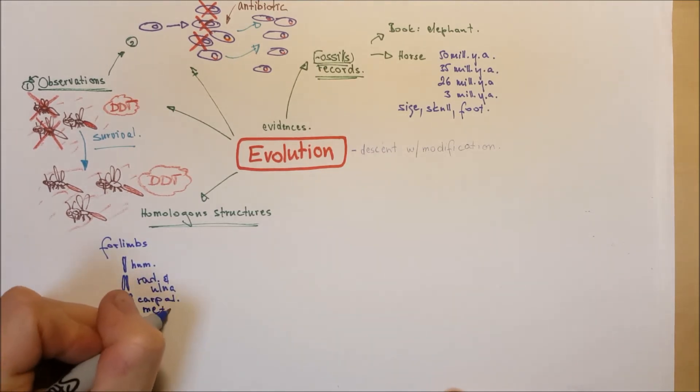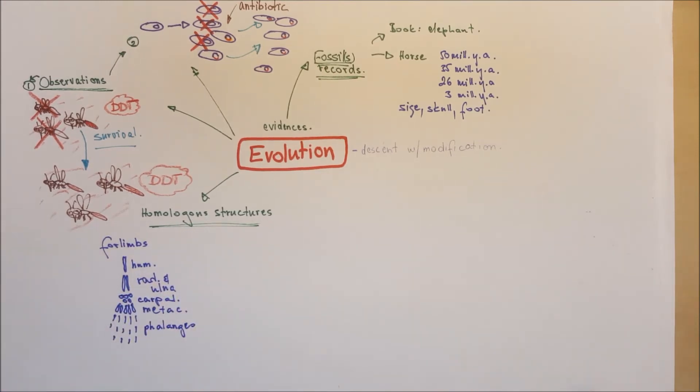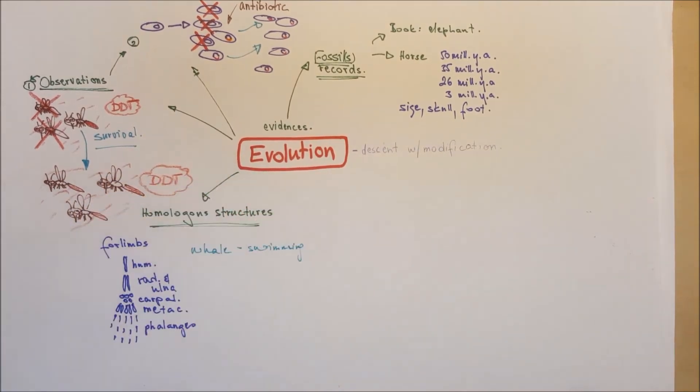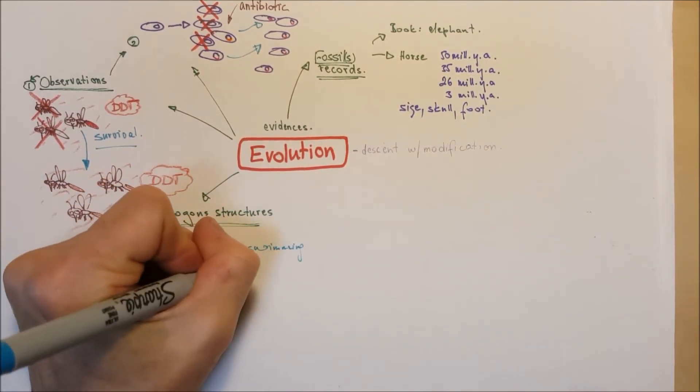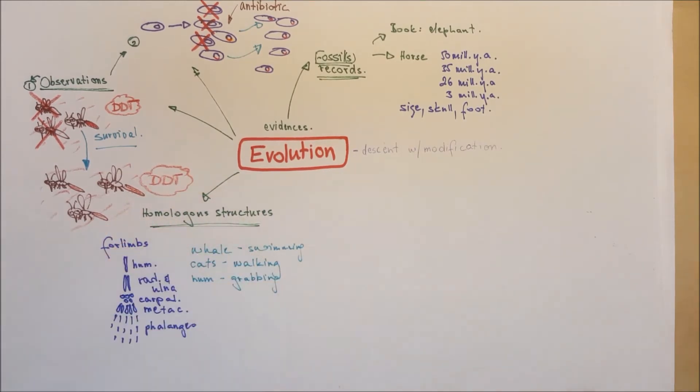If you are in anatomy, you will learn about that. If you are not, well, you still have to know these basic structures. Now, for the whale, it's modified into flippers and it's used for swimming, for the cats, for walking, as well as for humans, for grabbing subjects and objects.